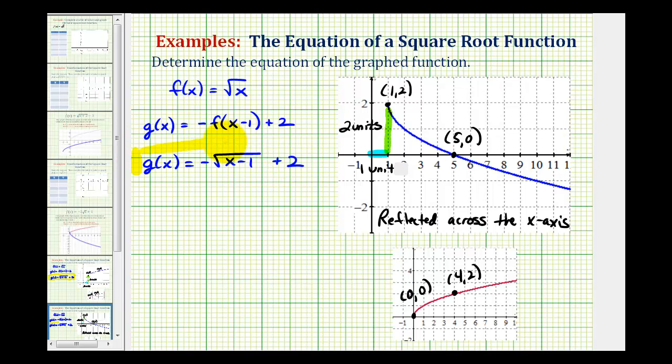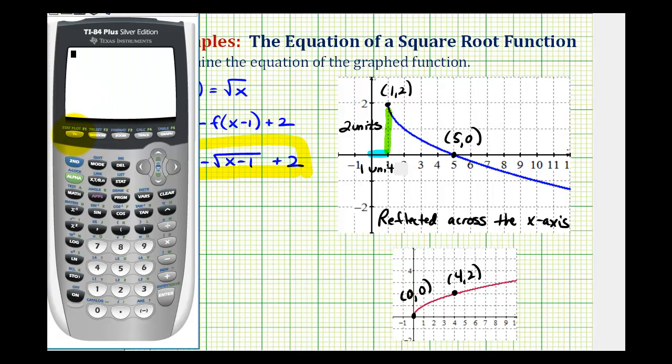Now let's go ahead and verify this on our graphing calculator. So we'll press y equals, type in our function, negative, then for the square root, we press second x squared, the quantity x minus one, close parenthesis, and then plus two.